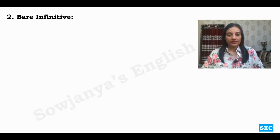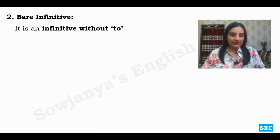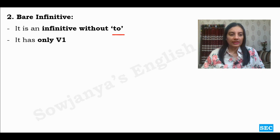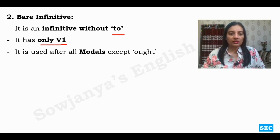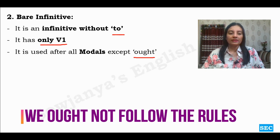Next is the bare infinitive. Many students face difficulty with this, but we will learn about it and use it correctly. It is an infinitive without 'to' — bare meaning empty or vacant. It is deprived of its partner 'to' and has only V1. It is used after all modals except 'ought to', which by default requires 'to', so bare infinitive doesn't fit there.